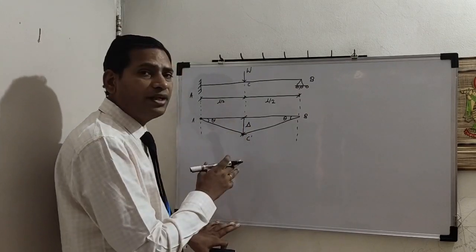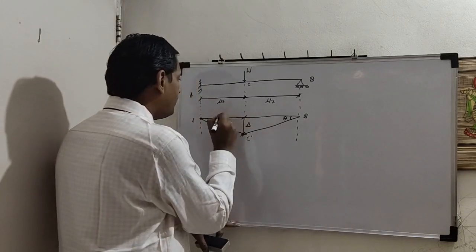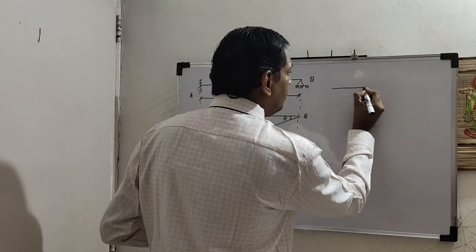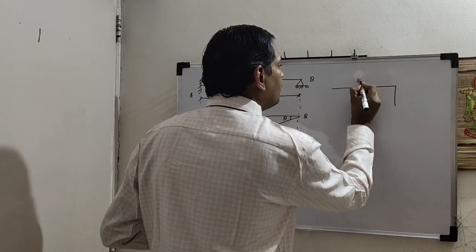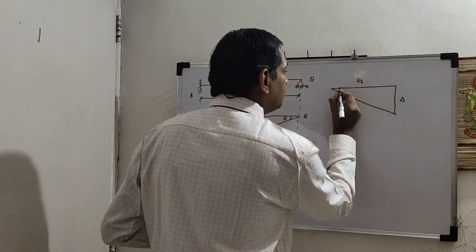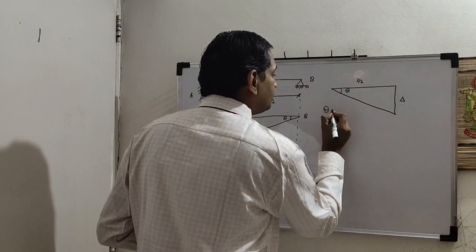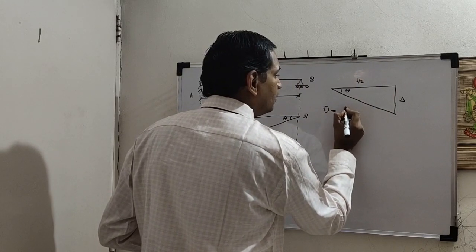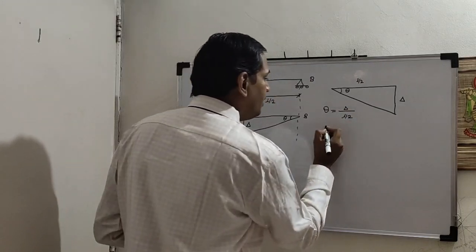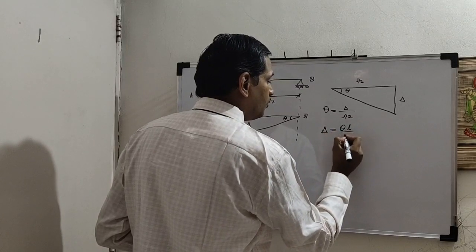So compared to the previous case of an eccentric point load, this becomes easy. Instead of considering both triangles separately, we can consider any one triangle to find delta in terms of theta. This is L by 2, and this is also L by 2. We draw this right-angled triangle with one side as L by 2 and the shorter side as delta. This angle is theta. So from geometry, theta equals delta divided by L by 2, which gives delta equals theta times L upon 2.